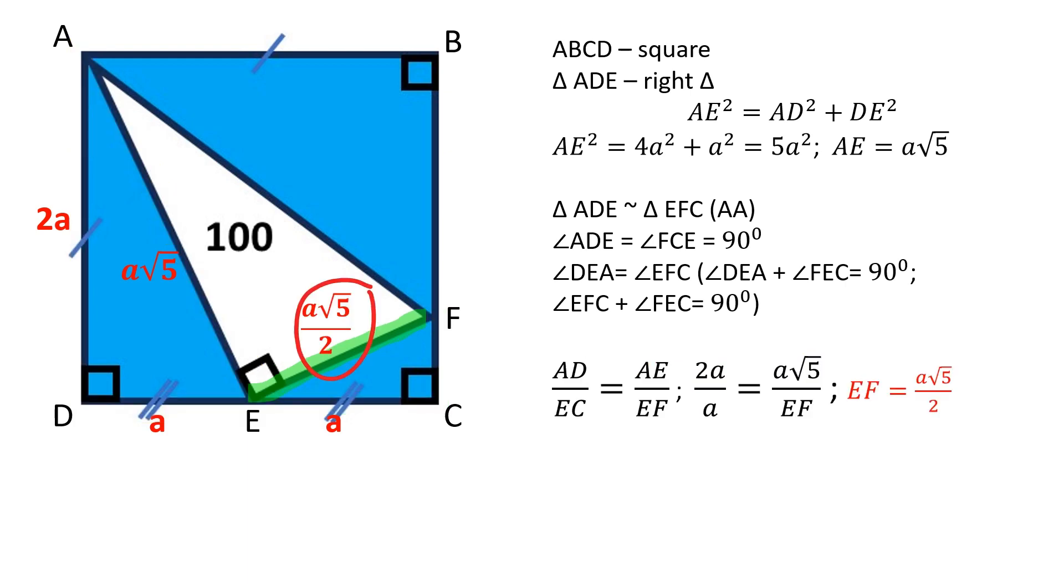EF is equal to a square root of 5 over 2. Triangle AEF is a right triangle. The area of a right triangle is equal to half the product of its legs.